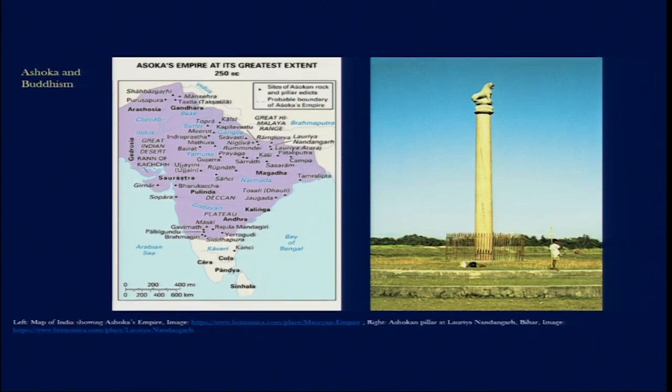The Mauryan dynasty ruled parts of northern India with their capital city as Pataliputra, today's Patna in the state of Bihar. The Mauryan dynasty ruled the Indian subcontinent between the 4th and 2nd century BC, reaching its peak during the time of Emperor Ashoka.